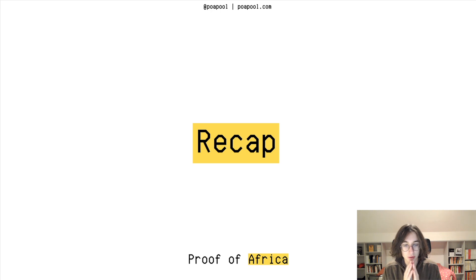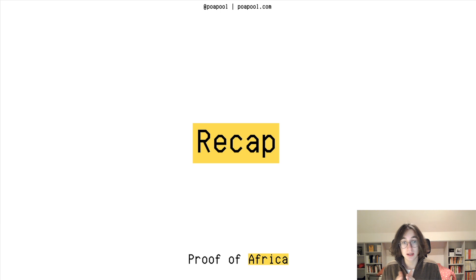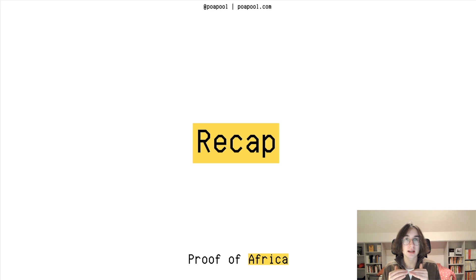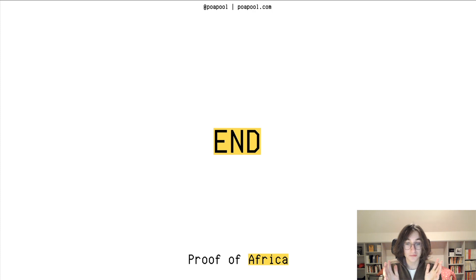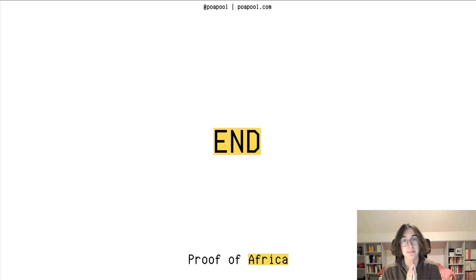It will be especially interesting to see once, for example, Cardano has Voltaire, or once Ethereum 2.0 is entirely there — because Ethereum 2.0 will be released in different periods of time. Once these projects are all fully launched, it will be interesting to see how they compare and what all that work resulted in. If you like this video, please share it, like it, follow, and comment. Visit our website POAPool.com and follow us on Twitter at POAPool. Bye!